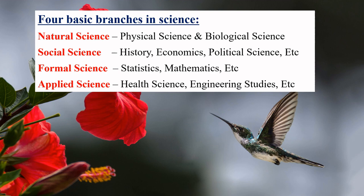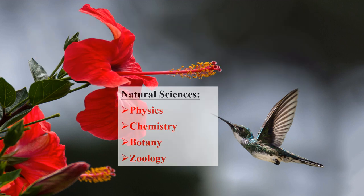Formal science includes statistics, mathematics, etc. Applied science includes health science, engineering studies, etc. Natural sciences are categorized into physics, chemistry, botany, and zoology.